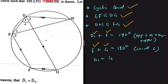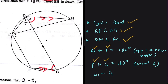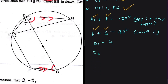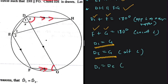DH is this line here, and it's parallel to FG. If DH is parallel to FG, then d2 and angle G are alternate angles, so d2 equals G. But we just said d1 equals G, and now d2 equals G as well. So we can conclude that d1 equals d2, since they both equal angle G.